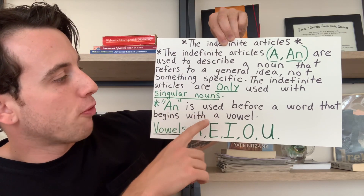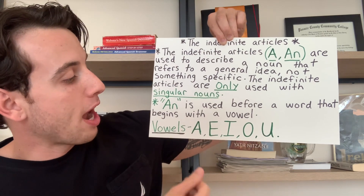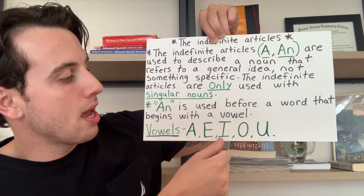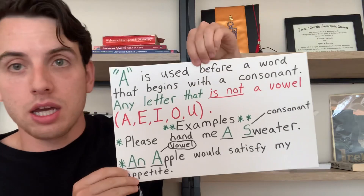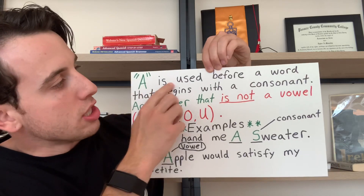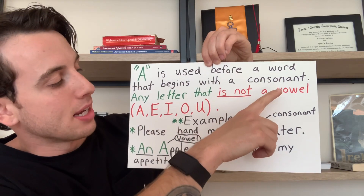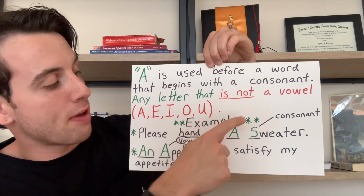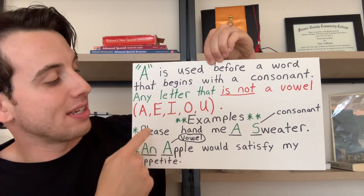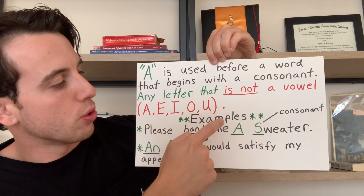'An' is used before a word that begins with a vowel, and the vowels are A, E, I, O, and U. 'A' is used before a word that begins with a consonant, which is any letter that is not a vowel — so any letter that is not A, E, I, O, or U.